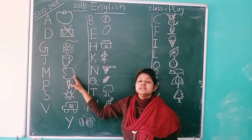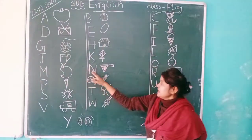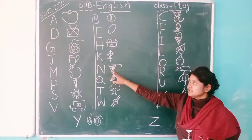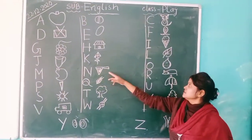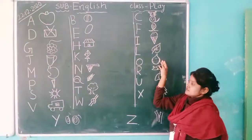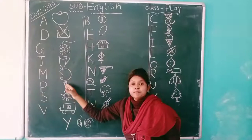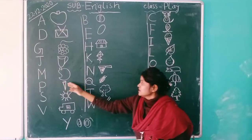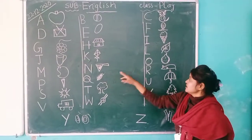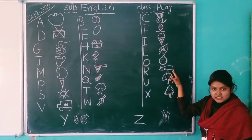Mango is our national fruit. Okay. Next, N. N for net. O. O for orange. P. P for pink. Q. Q for queen. R. R for rat.